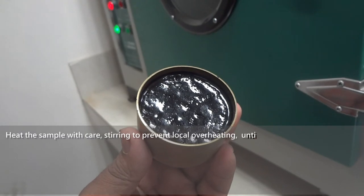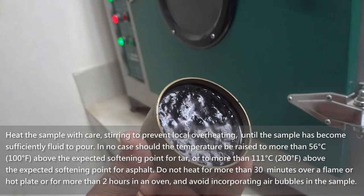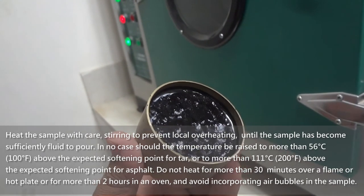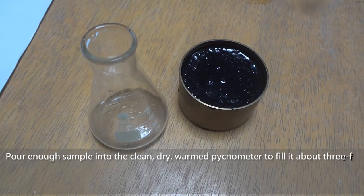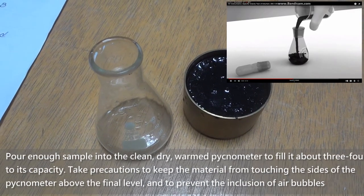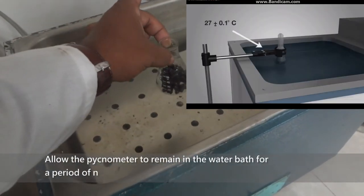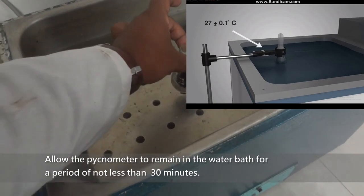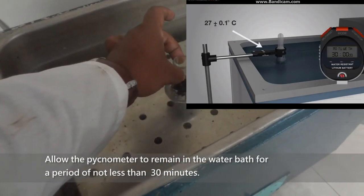Now this bitumen is to be heated to temperature between 75 degrees Celsius to 111 degrees Celsius in the oven. Fill the pycnometer about three-fourths of its capacity. Thereafter, it is cooled in water bath at 27 degrees Celsius plus minus 0.1 degrees Celsius for 40 minutes.